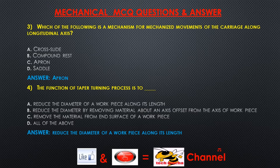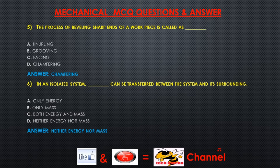Question 4: The function of the taper turning process is to — A) reduce the diameter of a workpiece along its length, B) reduce the diameter by removing material about an axis offset from the axis of the workpiece, C) remove material from the end surface of a workpiece, D) all of the above. Answer: Reduce the diameter of a workpiece along its length.